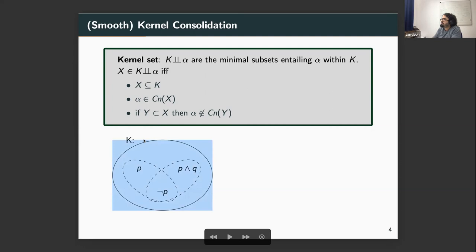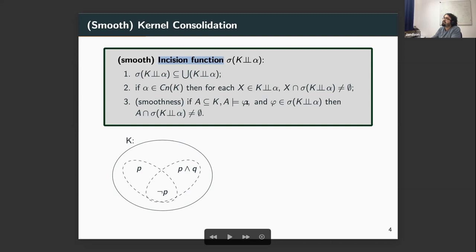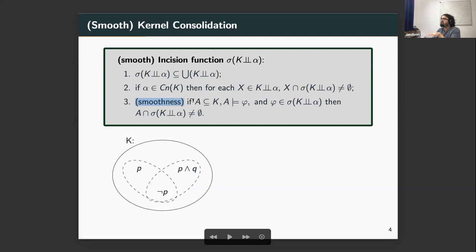For this knowledge base example, we have precisely two kernels: the one with p and not p, and the second one with the conjunction p and q and not p. For each of these kernels, you choose at least one formula to be removed, and this choice is realized by a function called an incision function. The problem is that, as illustrated with the previous example, you cannot make an arbitrary choice — I cannot just choose to remove p and not p because that is not a minimal change. So this choice needs to satisfy some minimal criteria in order to satisfy those rationalized postulates.